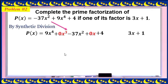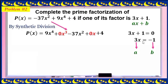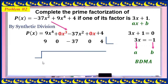Using synthetic division with divisor 3x + 1: equating to 0 gives x = -1/3. We use the B-dima-dima method for the case where the divisor is ax + b. Here a = 3 and b = -1 (sign changed). The coefficients are 9, 0, -37, 0, and 4. With a on the left and b on the right: bring down 9, divide by 3 to get 3, multiply by -1 to get -3, then add.